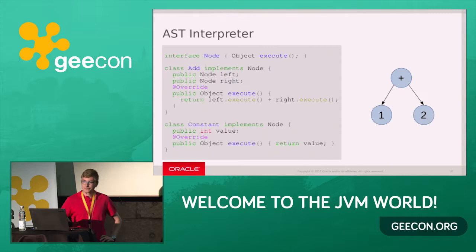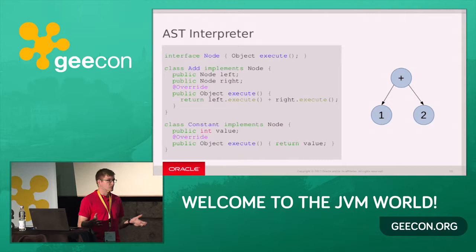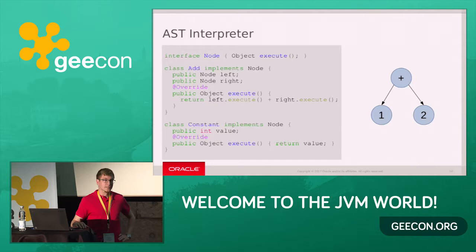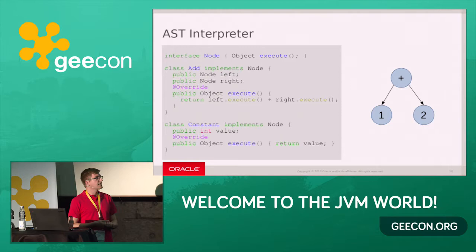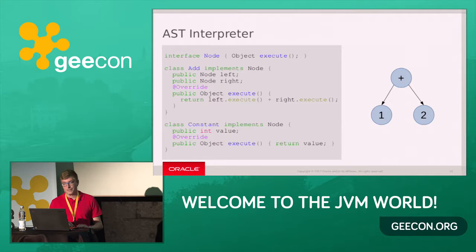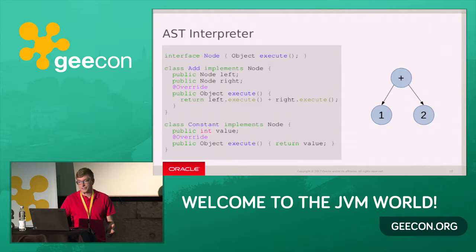Let's look at how this is done. First: AST interpreter. Programming languages can usually be parsed into a tree-like structure. You represent each node in the tree by an object that implements a certain interface with an execute method. When you execute an addition node, for example, you do divide and conquer — call the execute method of your left child, right child, and then do what the node is supposed to do. It doesn't need to care about what the children implement. That's why it's a nice and neat way to implement an interpreter.